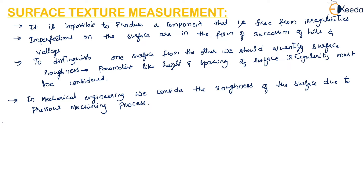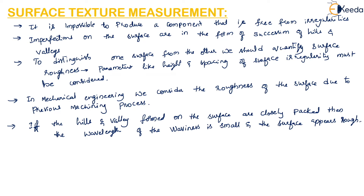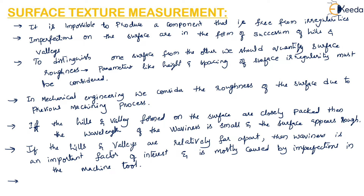If the hills and valleys on the surface are closely packed, the wavelength of waviness is small and the surface appears rough. If hills and valleys are relatively far apart, waviness is the predominant parameter of interest and is most likely caused by imperfections in the machine tool. A surface with closely packed hills and valleys is said to have a primary texture, whereas a surface with pronounced waviness is said to have a secondary texture.